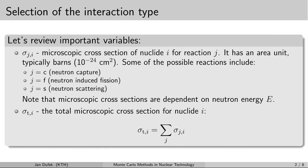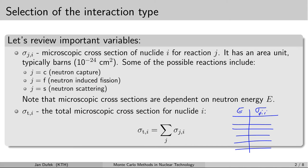A complication to our simulation is the fact that the cross-sections in general are dependent on the neutron energy. As the neutron scatters and loses its energy, the cross-sections change accordingly. This energy dependence represents a big difficulty because it is pretty complex and cannot be expressed in terms of some simple analytical function. So the data for the neutron cross-sections need to be stored in table form.